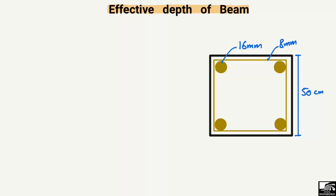I will explain this with the help of an example. This is a cross-section of a beam where we have the width of the beam, let's suppose B, and this is the total height or depth of the beam, represented by H, which is 50 centimeters. The stirrups used in this beam are 8 millimeter diameter — these are the transverse reinforcement — while the main bar reinforcement has a diameter of 16 millimeters.